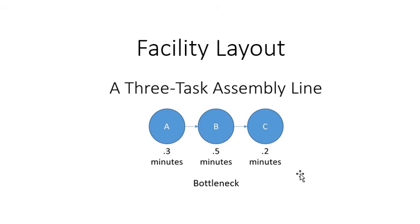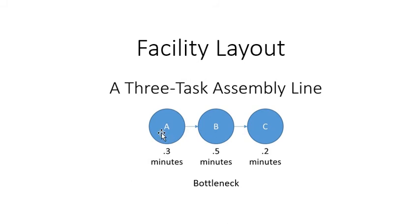At steady state, we have one unit that will start and move through, and it will take on average 0.5 minutes for a unit to get through. Person 1 does their step, hands it off to person B, who takes half a minute to do their step. While they're working, person A grabs the next one and starts working, then hands it off to C. C works on theirs, B gets their part from A, and we get this steady state of flow.